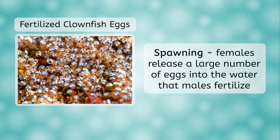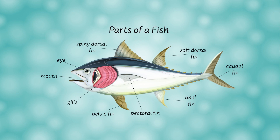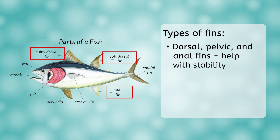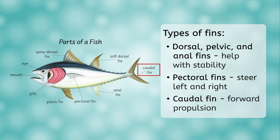When talking about the key characteristics of fish, I mentioned the presence of fins and gills. Let's take a moment to discuss these anatomical features in more detail. First up, fins. While the fins look different on all species, they work to steer, balance, and move the fish. There are four types of fins: dorsal fins, which help with stability; pelvic and anal fins, that also help support stability; pectoral fins, which help steer the fish left and right; and the caudal fin, that propels the fish forward.